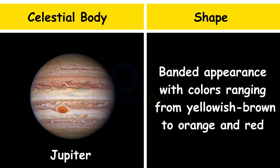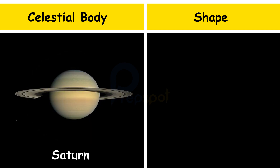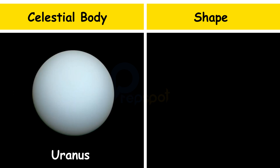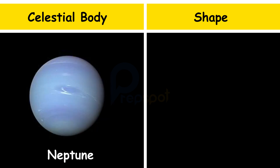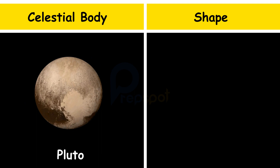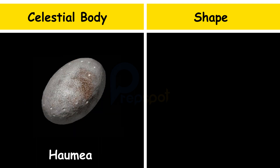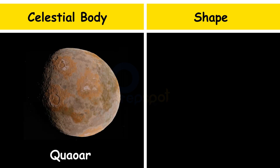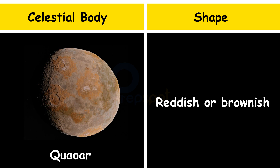Jupiter's banded appearance with colors ranging from yellowish brown to orange and red; Saturn — pale yellow or yellowish brown; Uranus — bluish green; Neptune — bluish green; Pluto — reddish brown; Haumea — gray or reddish brown; Quaoar — reddish or brownish.